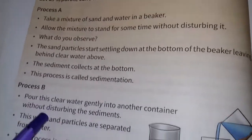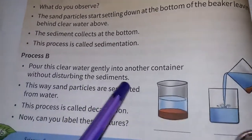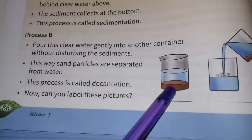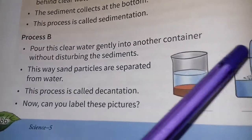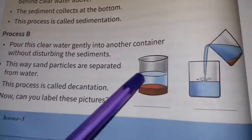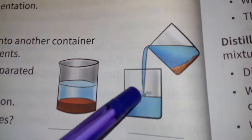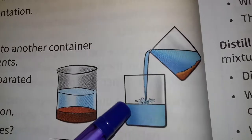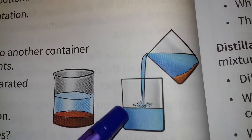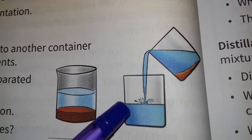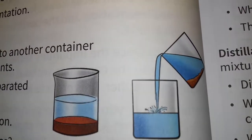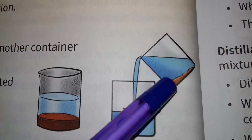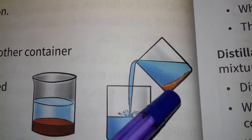In Process B: pour the clear water gently into another container without disturbing the sediments. This is where the sand particles are separated from the water. The sand particles are left behind.